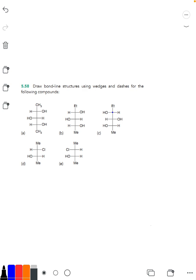Hi everybody, on this video we're going to be looking at problem 5.58 from the Klein organic chemistry third edition textbook, studying how to convert Fischer projections into bond-line structures.